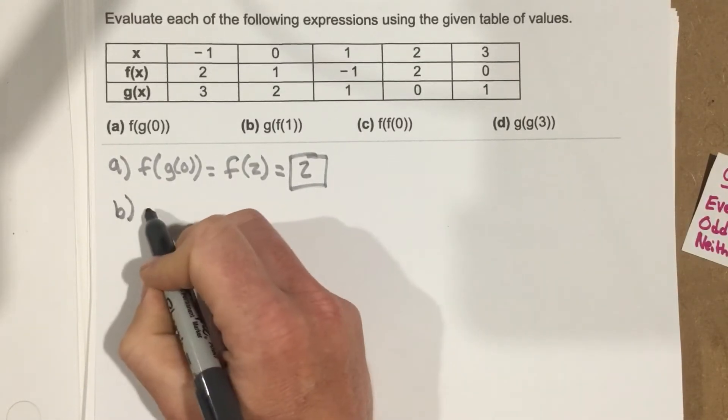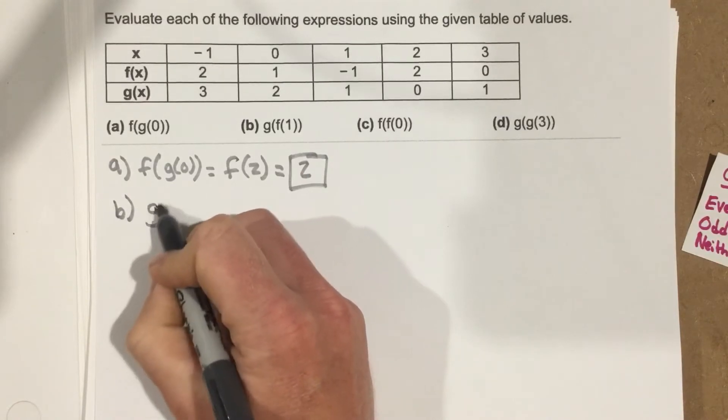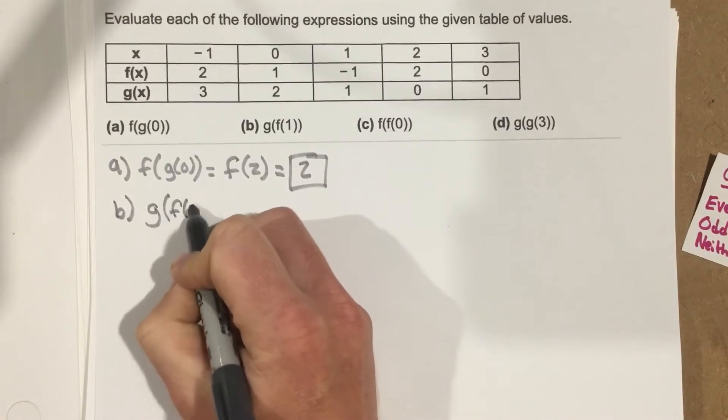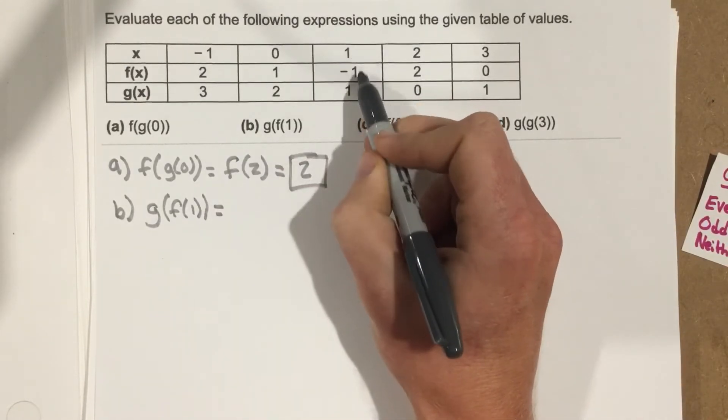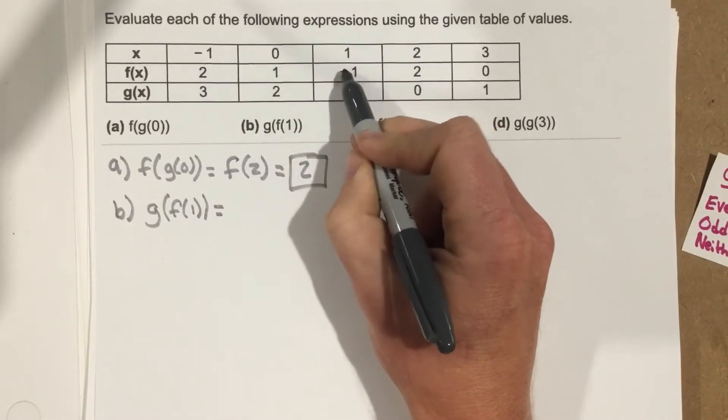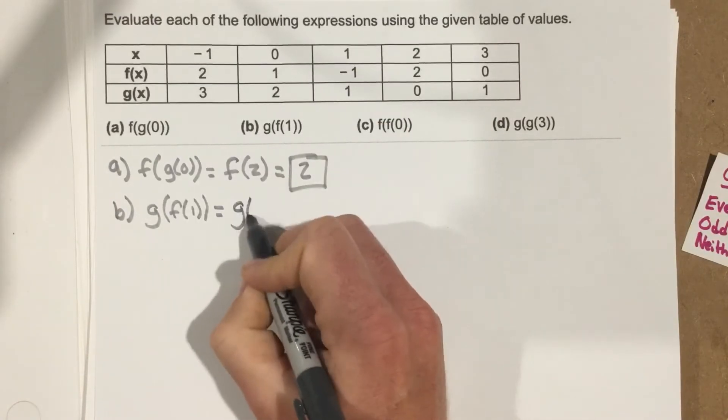Go to part B, and we have g of f of 1. So I go to 1 for an x value. I look at the f function. That's negative 1, which is the output. So I end up with g of negative 1.